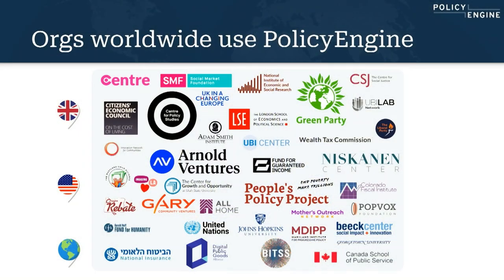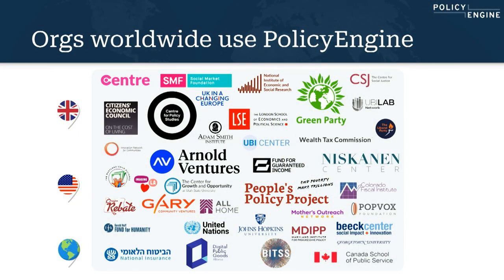There are quite a number of organizations that use Policy Engine. We started in the UK in 2021 and launched in the US in 2022. Already we're seeing usage across the political spectrum — the Green Party in the UK has used Policy Engine for evaluating their manifesto, and the Center for Policy Studies, the most prominent conservative think tank in the UK, has as well. Here in the US, we've had organizations working on benefit access and analysis, and we've received recognition as a digital public good from the UN, with adoption around the world.